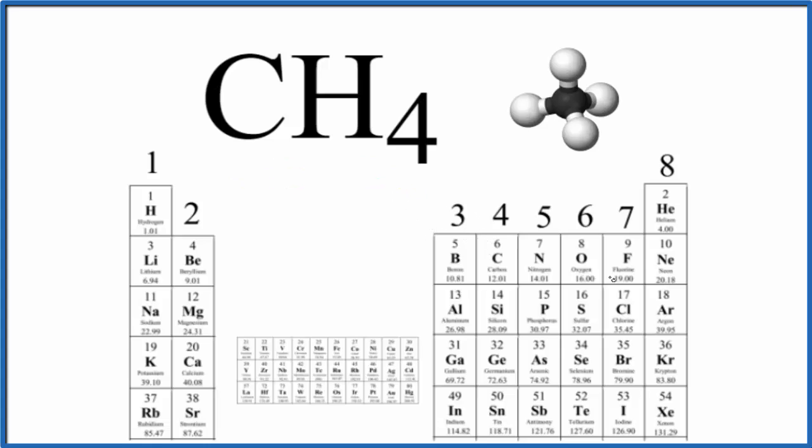So to find the number of valence electrons, it's useful to think of the periodic table by groups here. Group 1, all of these have one valence electron. Group 2, they all have two.